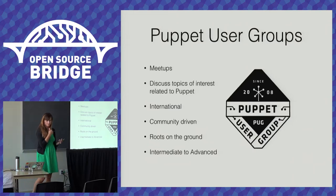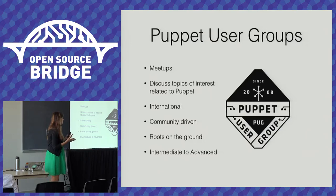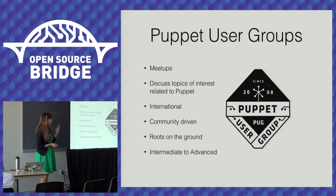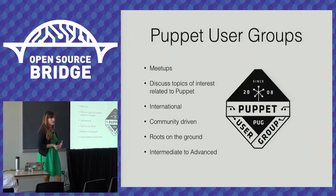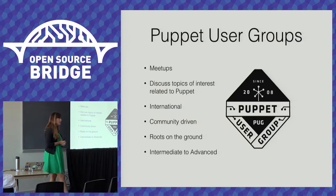This is changing as we build Puppet user groups in emerging markets. For instance, Kuala Lumpur is going to be newer to the IT automation conversation, so we'd have a more beginner-level focus there. Constraints around Puppet user groups include where they'll meet, how they'll pay for food, who's going to talk, and emerging market concerns we're working through.